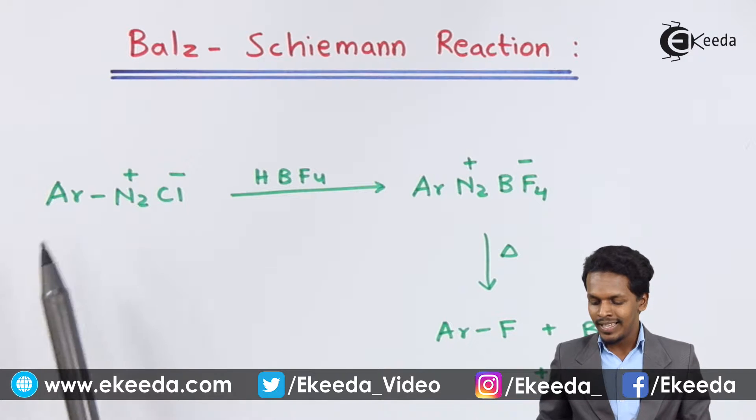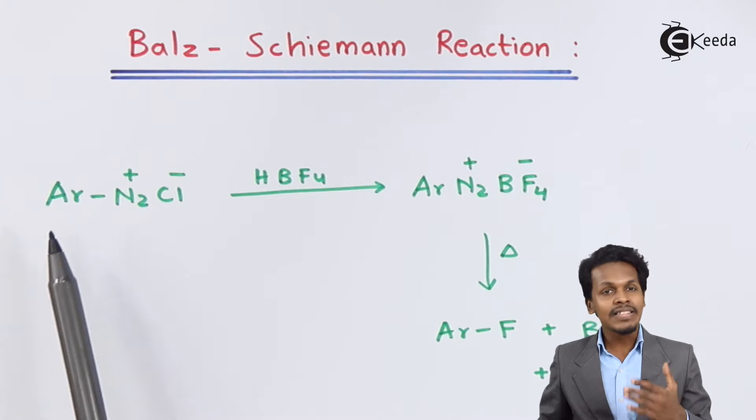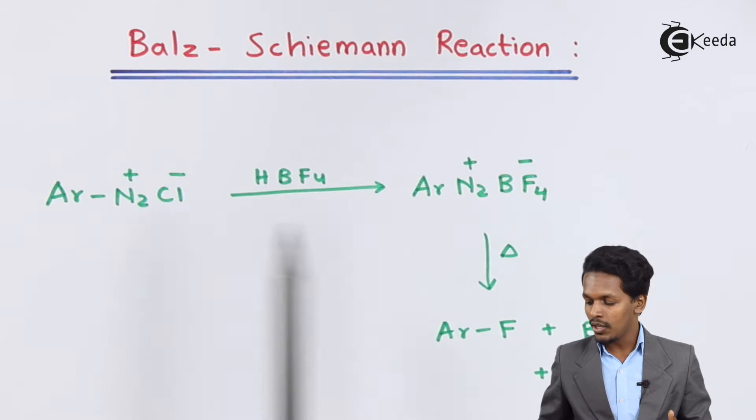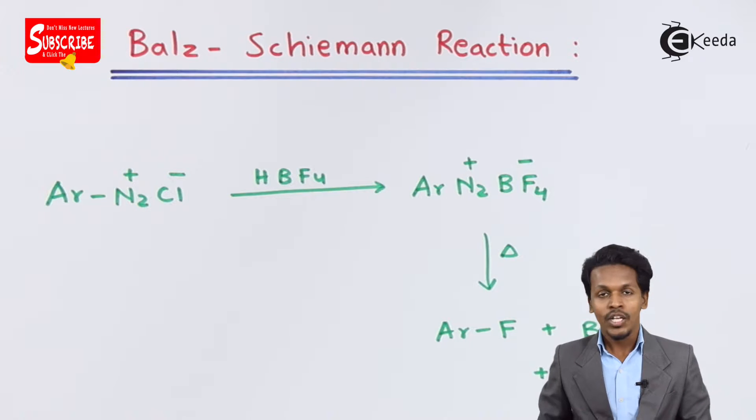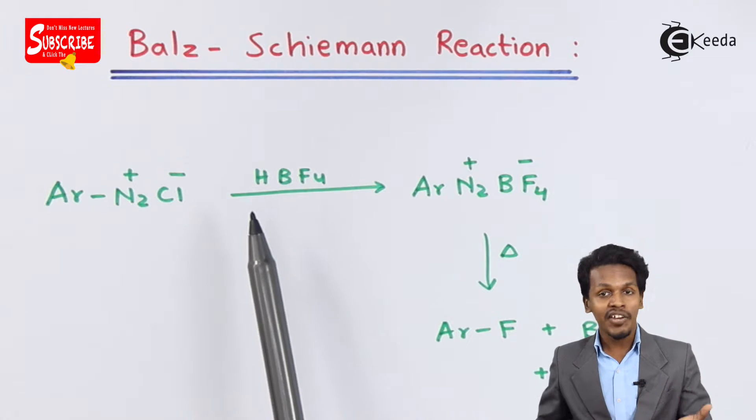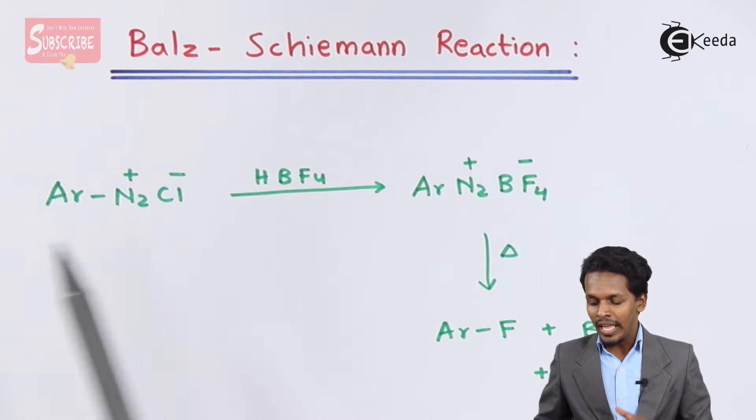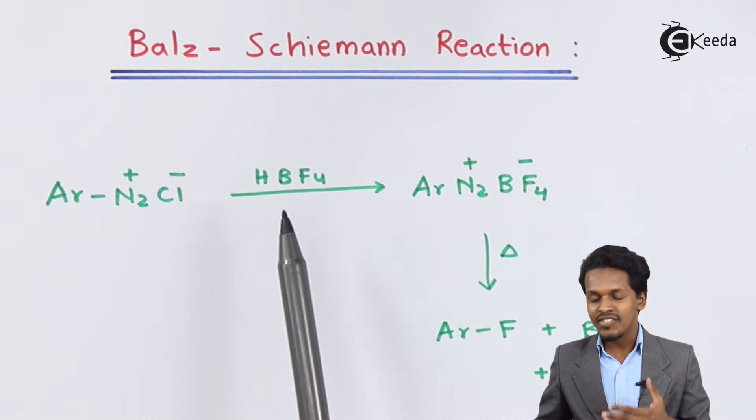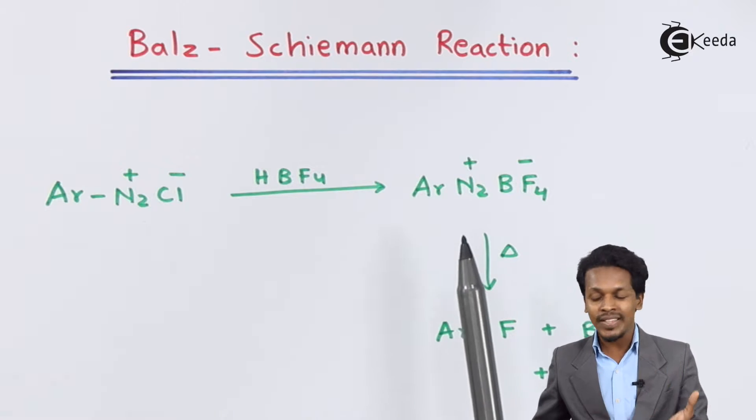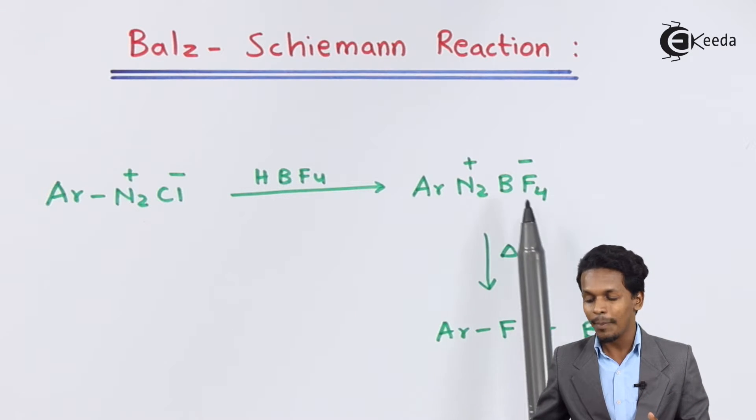For that, this is the general reaction that I have mentioned here. Basically, we can easily convert aryl diazonium chloride to aryl fluoride. For that, we are using a reagent that is HBF4, which is also known as fluoroboric acid. So whenever this aryl diazonium chloride is treated with HBF4, the product that we could get is ArN2BF4.